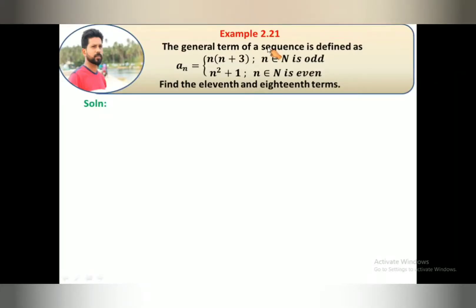Hi students, now watching example 2.21. The general term of a sequence is defined as a_n equal to n(n+3) when n is odd.